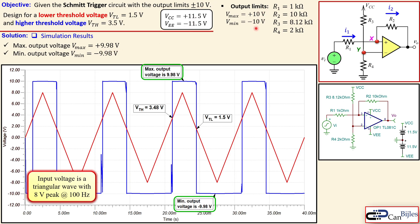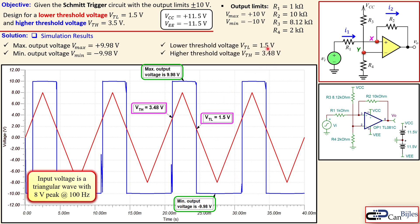Looking at the threshold voltages in the simulation: the input rising through 3.48 V causes the output to switch from low to high state — the non-inverting action — which is very close to the target of 3.5 V (error of about 20 mV). On the way down, the output switches from high to low at exactly 1.5 V, matching the target perfectly. These results confirm we have achieved our design objectives within practical tolerances.